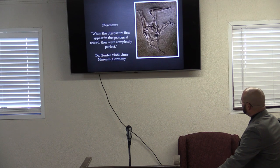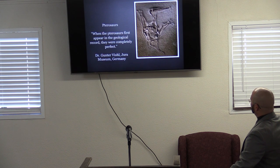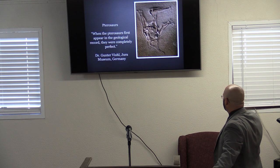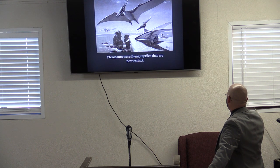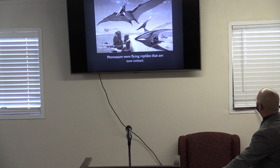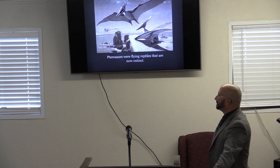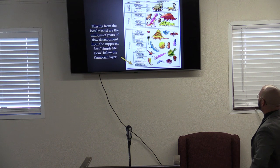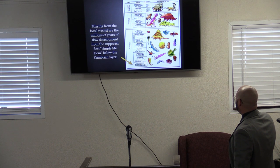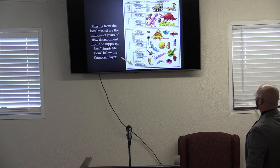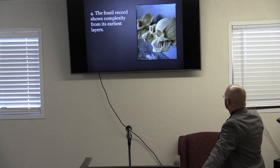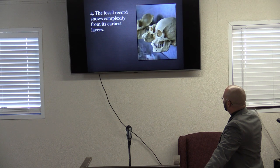Pterosaurs were flying reptiles that are now extinct. Missing from the fossil record are the millions of years of slow development from the supposed first simple life form below the Cambrian layer. Where are all the transitional creatures that are supposed to be there? Number four: the fossil record shows complexity from its earliest layers. They say we started off very simple at the bottom — simple-celled organisms — but the fossil record shows complexity from the very beginning.